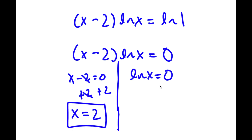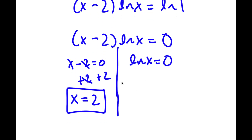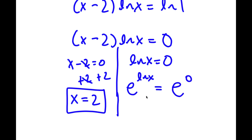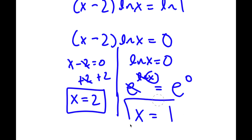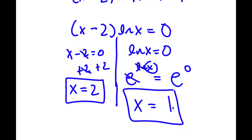For ln x equals 0, I'm going to take e to the power of both sides. So I have e to the power of ln x is equal to e to the power of 0. Now e and ln simply cancel out, so I'm left with x is equal to e to the power of 0, which is 1, because anything to the power of 0 is 1. So I have x equals 1. These are my two solutions.